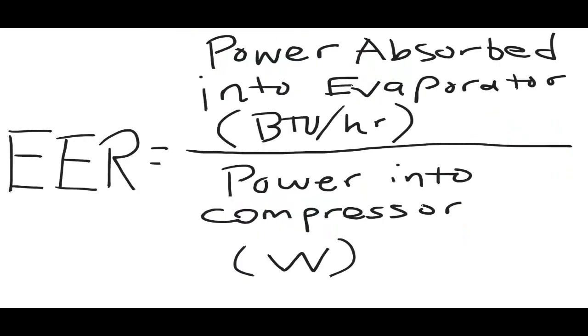If it's easier for you to think in terms of power rather than energy, there is another way to calculate EER. We need the power absorbed into the evaporator in BTUs per hour, and the power into the compressor in watts. So if you decide to use the units BTUs per hour and watts, you will still get EER.